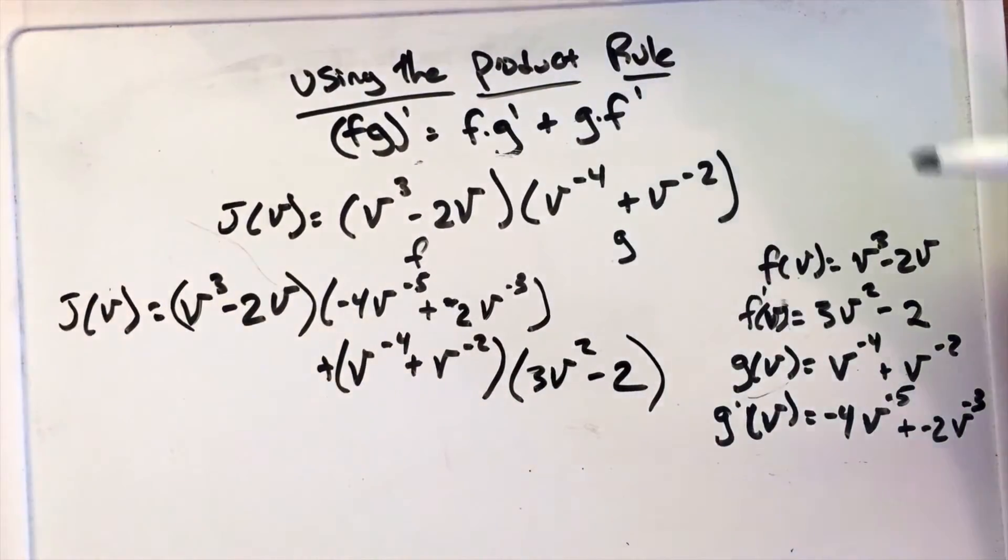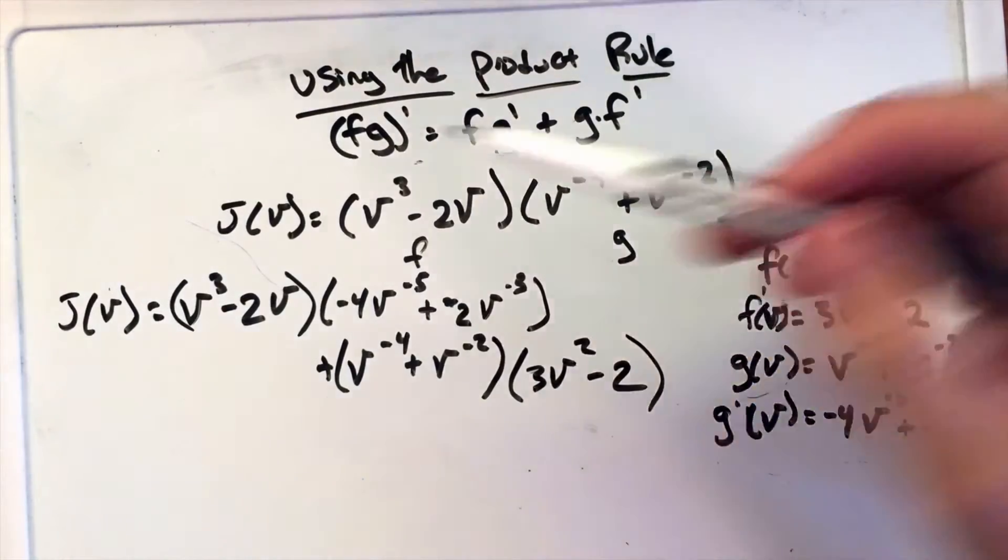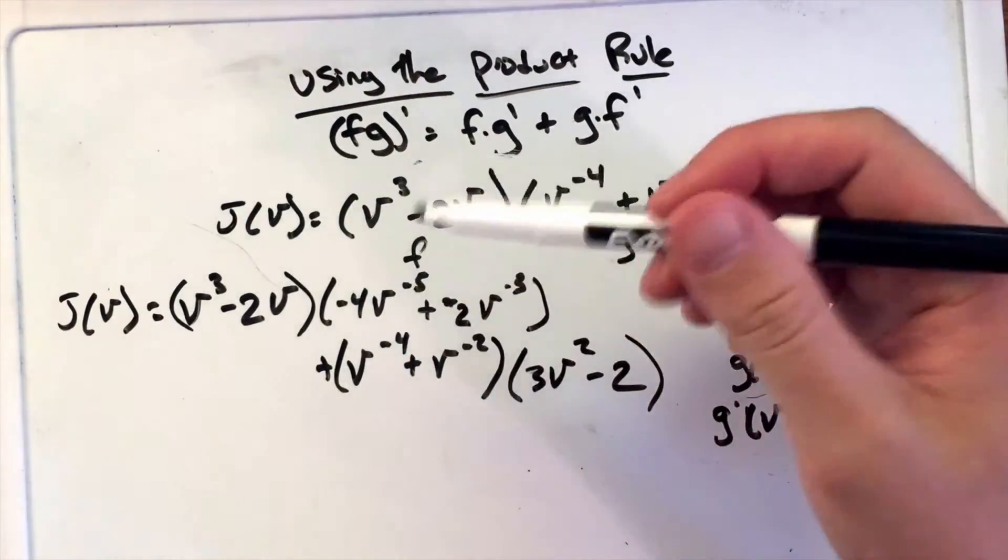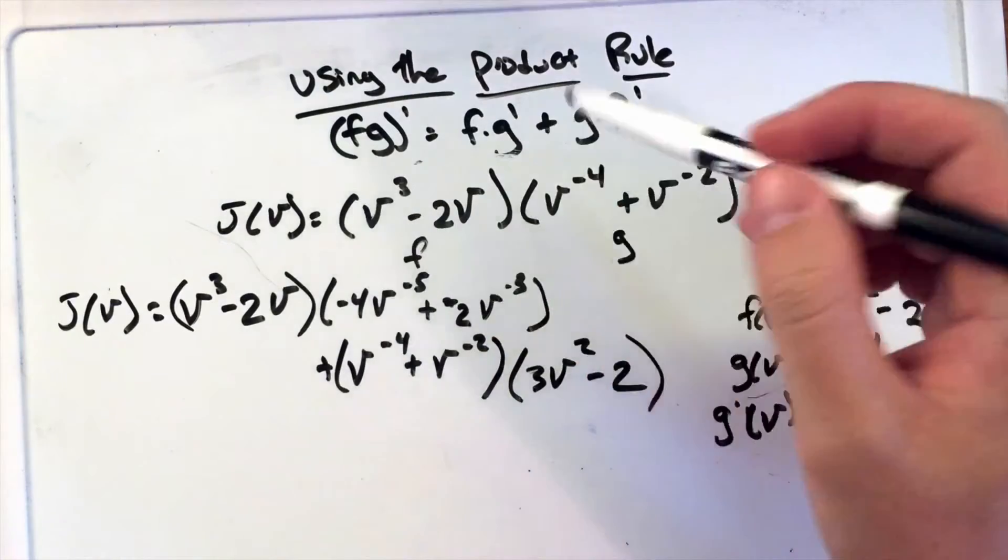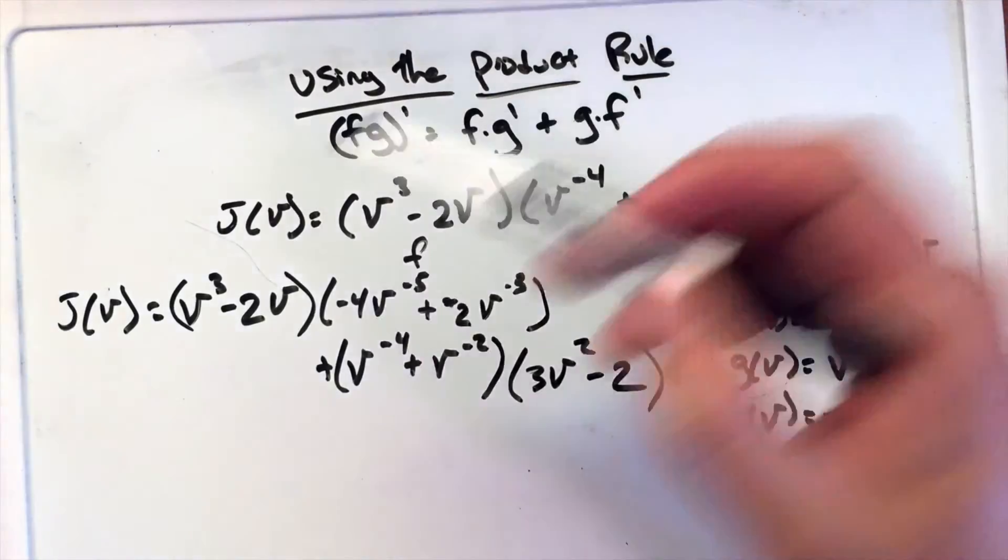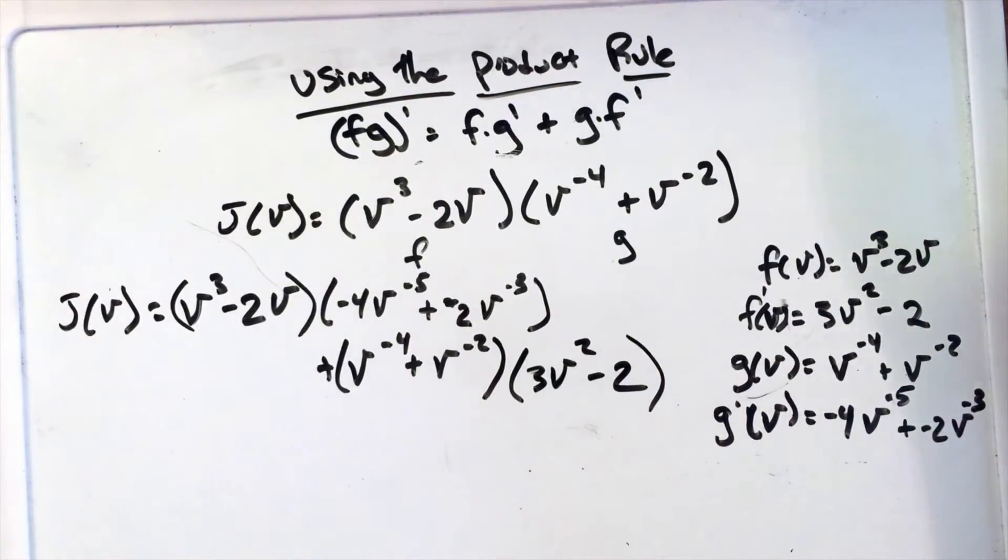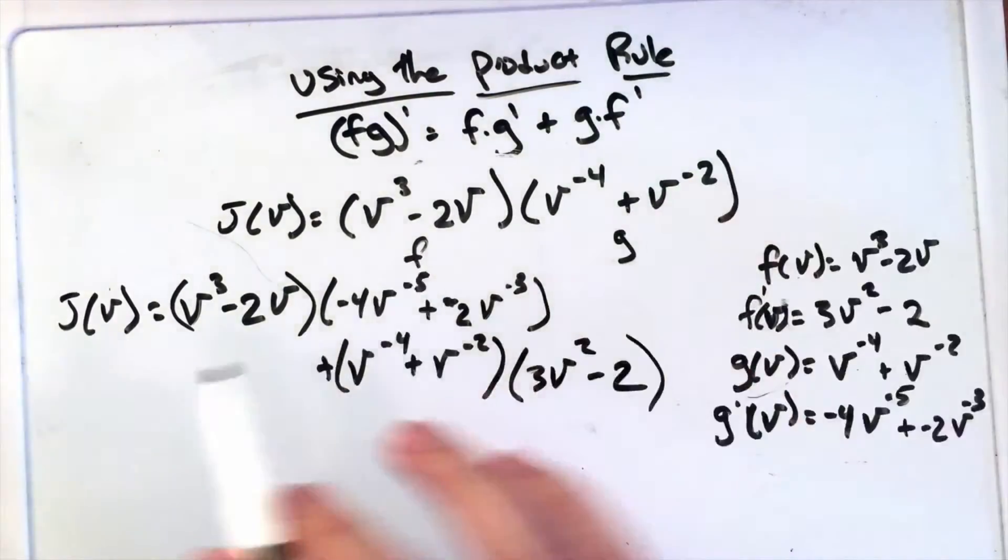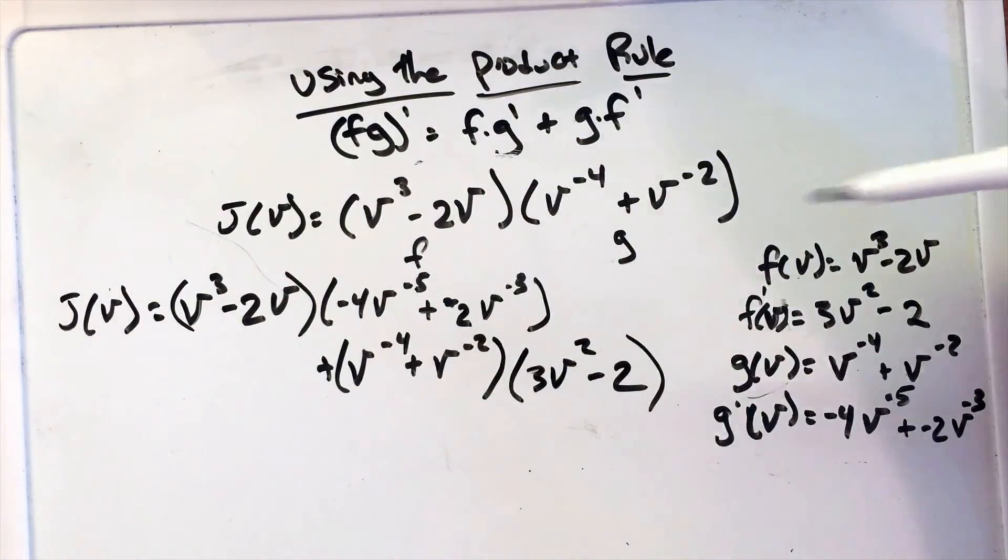You can simplify this - I hate the word FOIL, but you can FOIL and combine all your like terms. But I know for the AP test, it's okay to leave it as such. Hope this helped you get the product rule down into the complete equation, and you can practice simplifying on your own. Thanks for watching, have a good day.